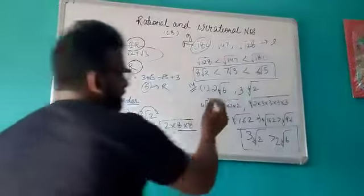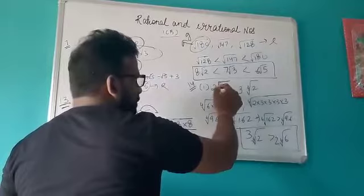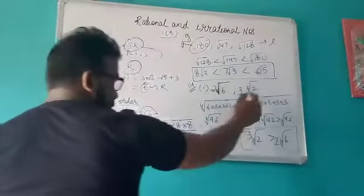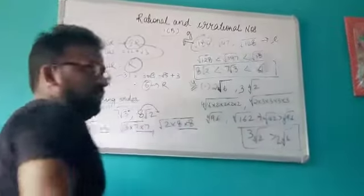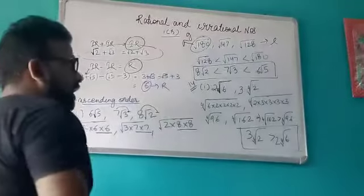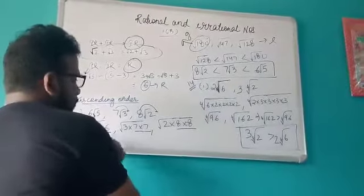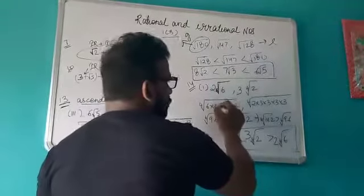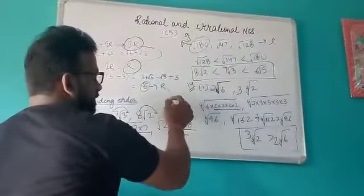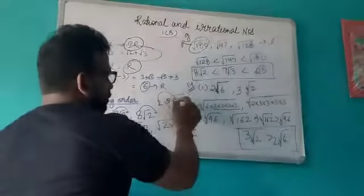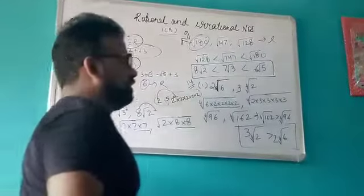Now suppose the question has fourth roots: 2·⁴√6 and 3·⁴√2. We cannot compare them directly because 2 and 3 are outside. So we take the coefficients inside the fourth root. Since it is a fourth root, we take the coefficient 4 times — if it were a fifth root, you would take it 5 times. Whatever the root is, you take the quantity that many times.